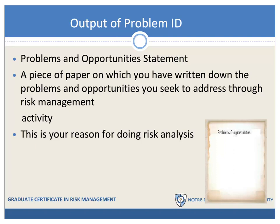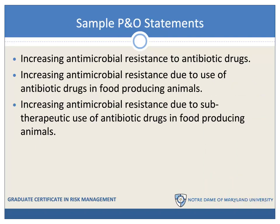The output of the problem identification step is a problems and opportunities statement — literally a piece of paper on which you have written down the problems and opportunities you seek to address through your risk management activity. This is your reason for doing risk analysis. The process of developing a problems and opportunities statement is iterative. Ideally you would start on the first day you initiate a risk management activity, though you're not going to understand the problems or opportunities as well initially as you will later, especially once you've begun to assess the associated risks.